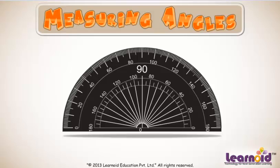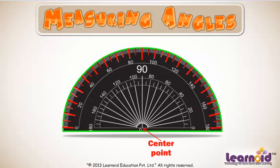A protractor is a semicircle instrument with angles marked on it. The protractor has a center point and two scales marked from zero degrees to 180 degrees.